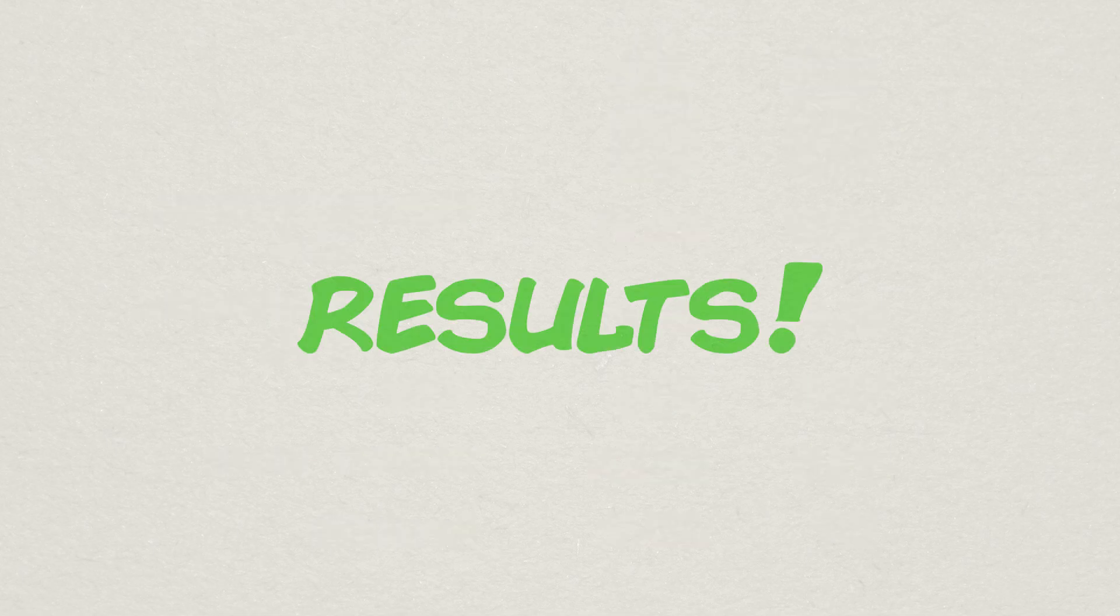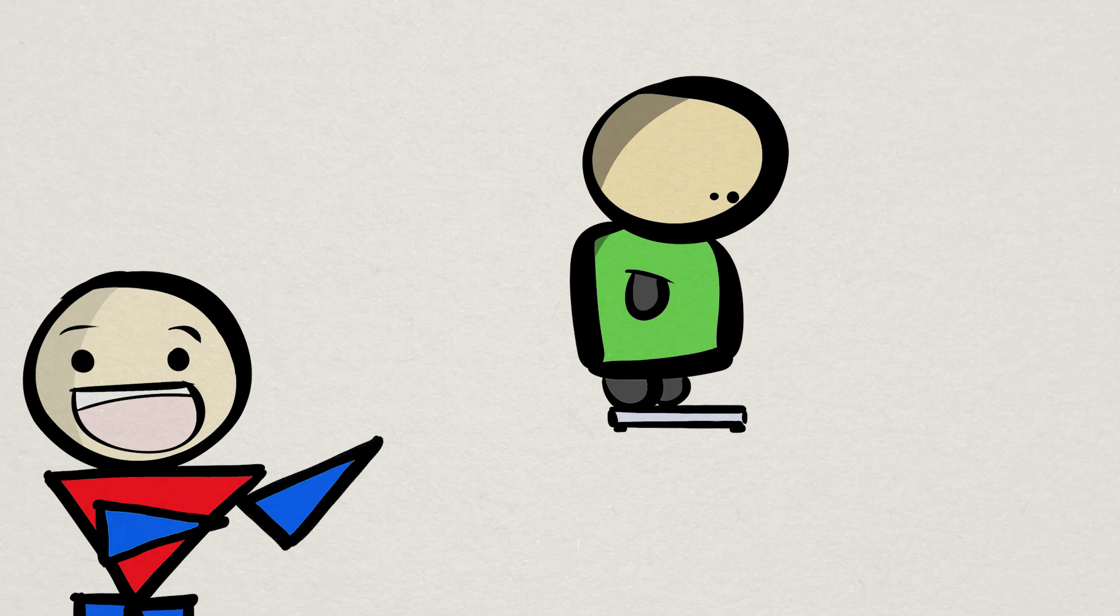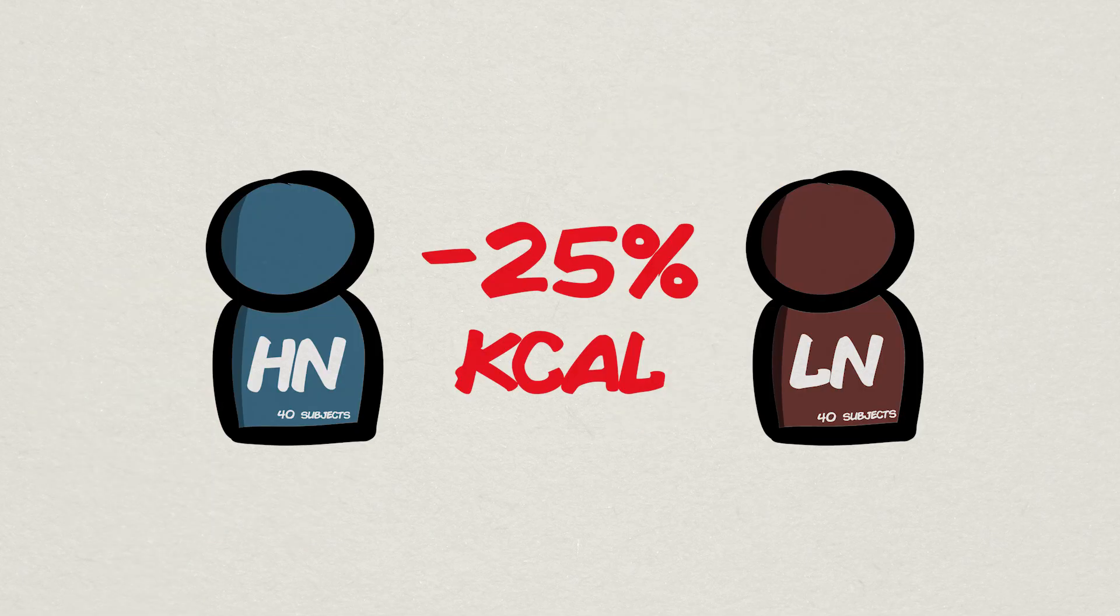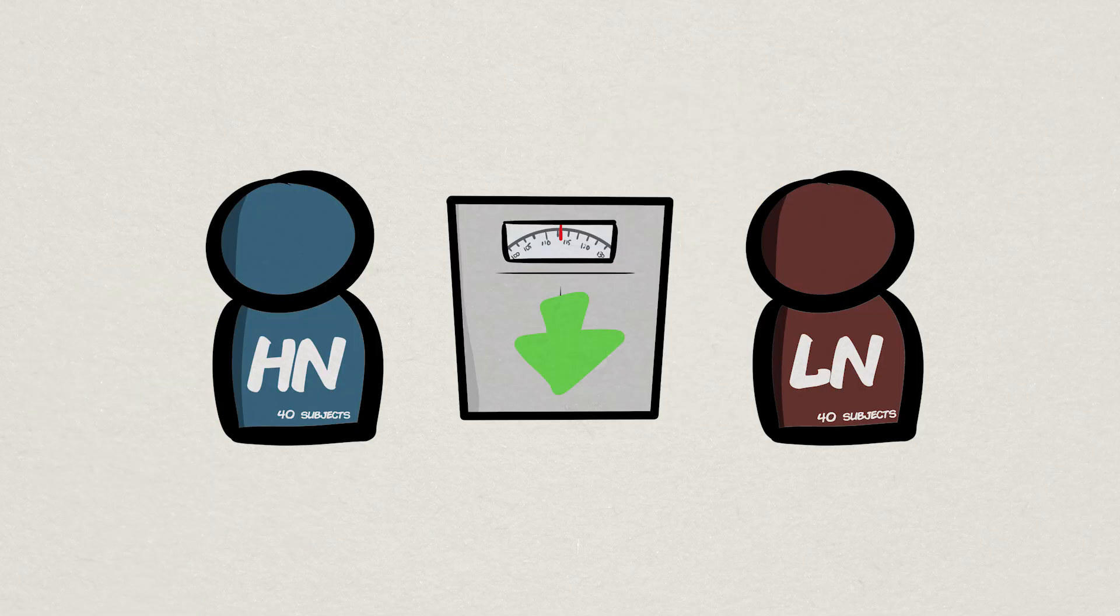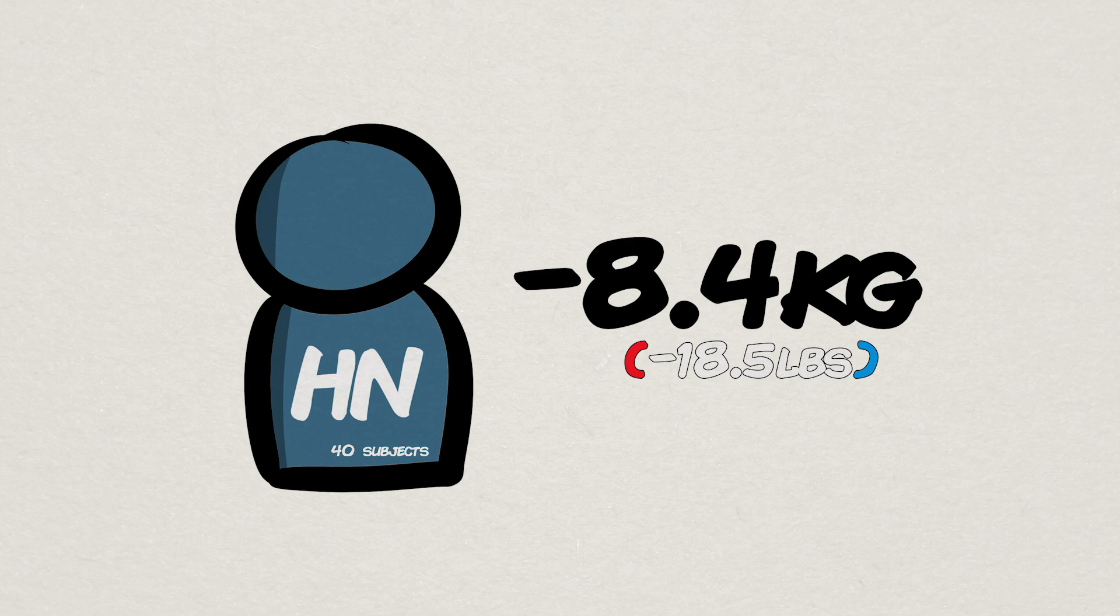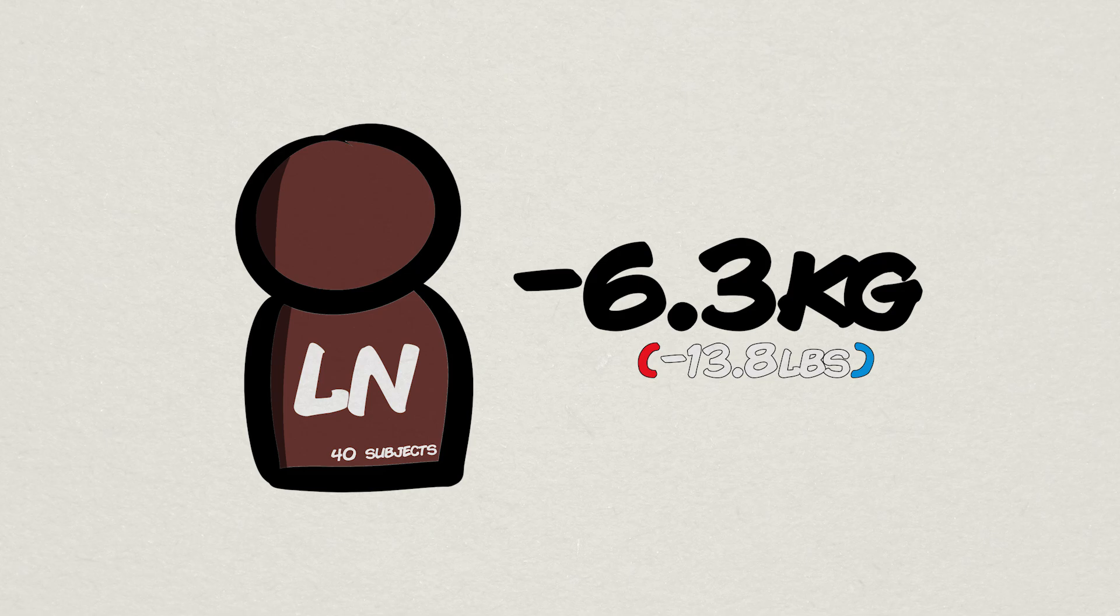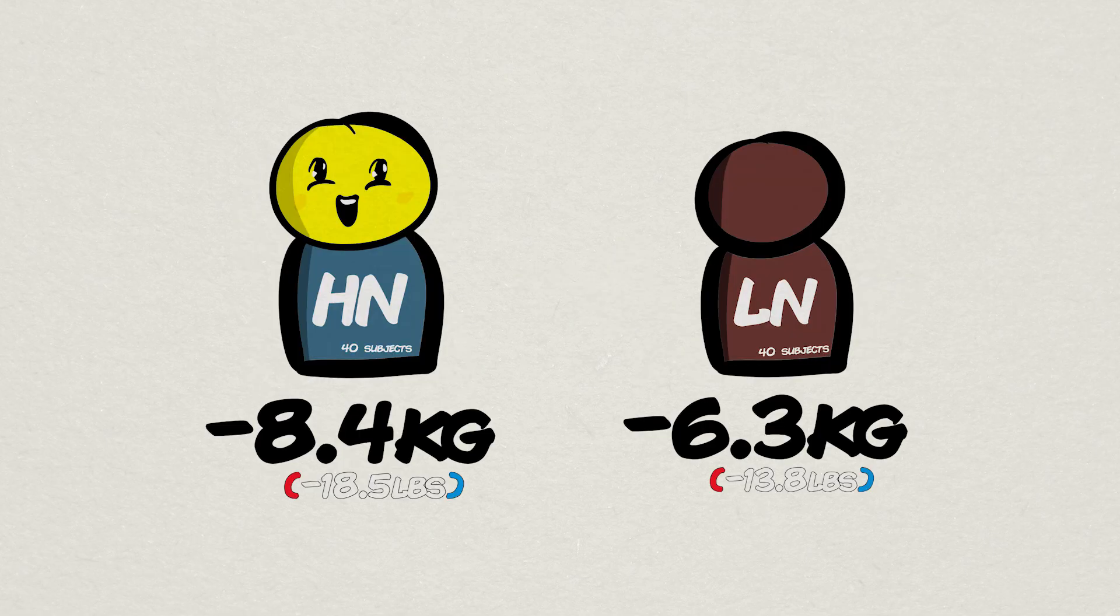And now for the results. First, the big thing, weight loss. Unsurprisingly, with such a high calorie deficit, both groups lost weight. The high-nutrient quality group on average lost 8.4 kilograms or about 18.5 pounds in 12 weeks. The low-nutrient quality group on average lost 6.3 kilos or about 13.8 pounds in 12 weeks. A very clear advantage to the higher-quality nutrients.